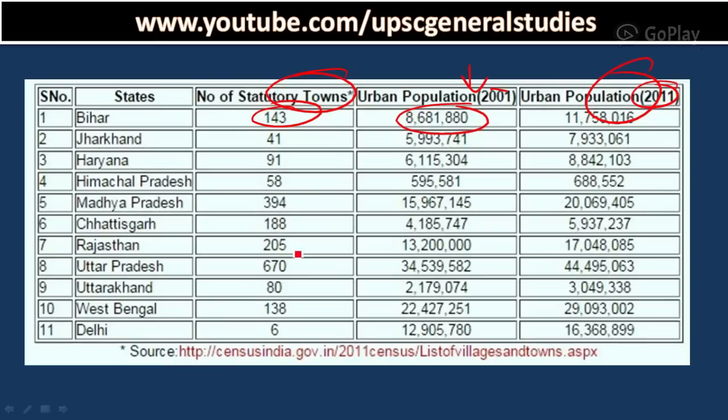In Uttar Pradesh, we have 670 statutory towns. It is 34 million people, equal to the population of Italy or some European countries. It increased to 44 million, that is 4.4 crore people. You can imagine the pressure of the population on the Ganga River and unsustainable use of the river for various productive purposes.